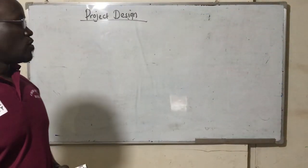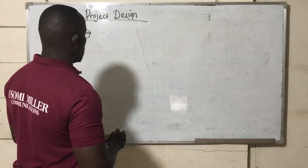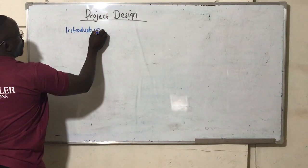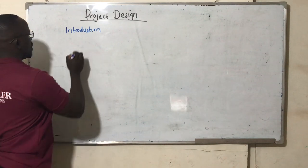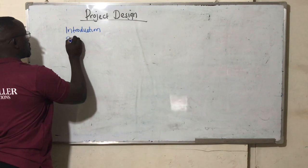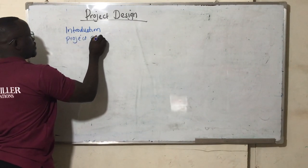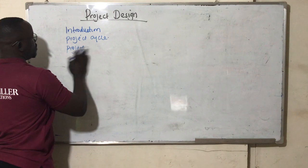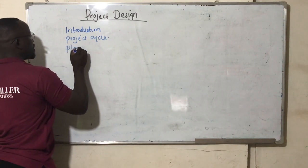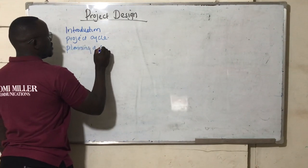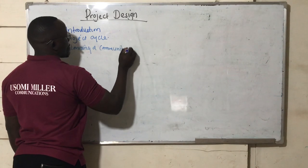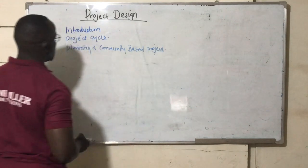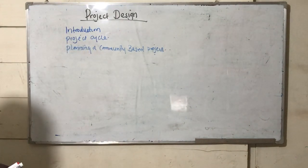In class, we have looked at several chapters. We looked at the introduction, where we understood more about project. After the introduction, we went further and looked at project cycle. After project cycle, last week we looked at planning a community-based project, which we finalized in the third recorded lecture.